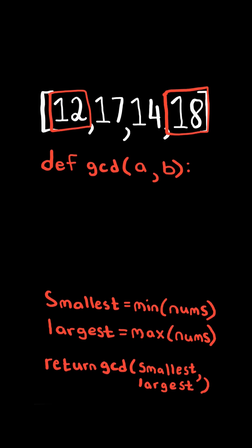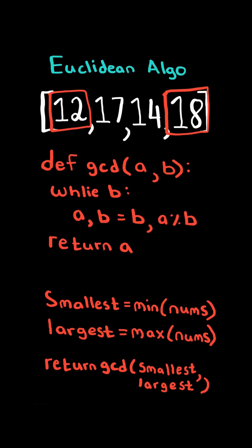We will define a greatest common divisor function that implements the Euclidean algorithm. For example, we are passing in 12 and 18, so we set a to b and b is set to a mod b.